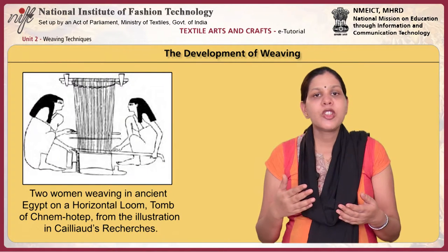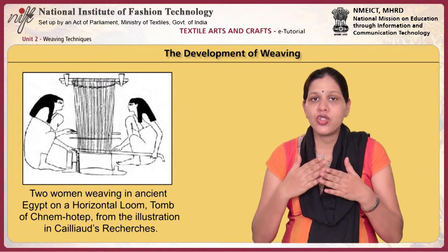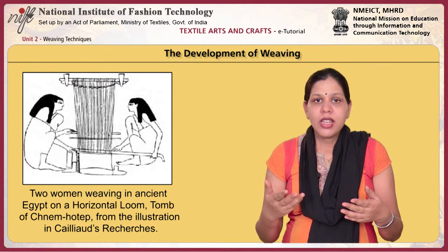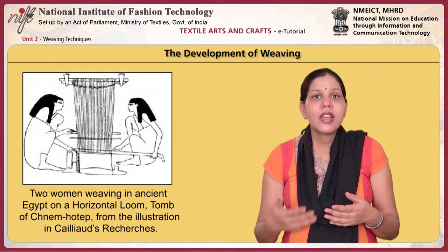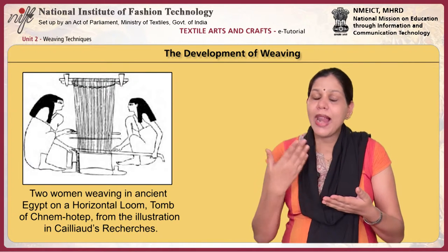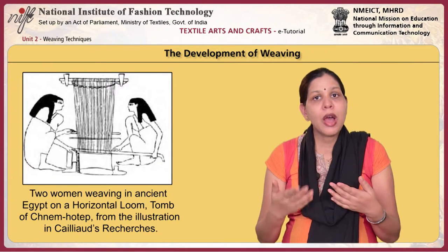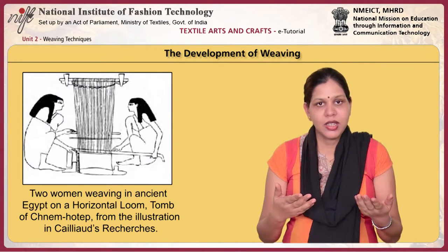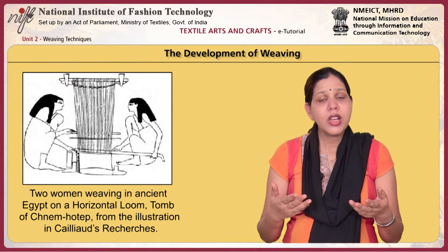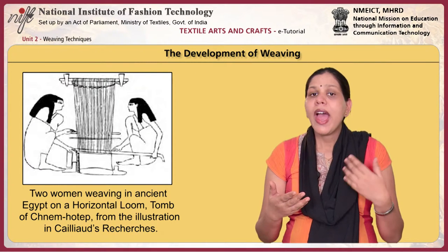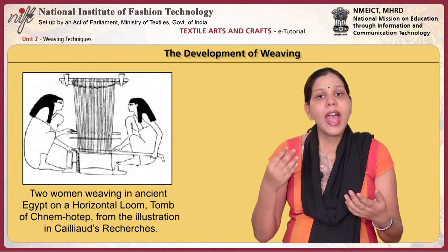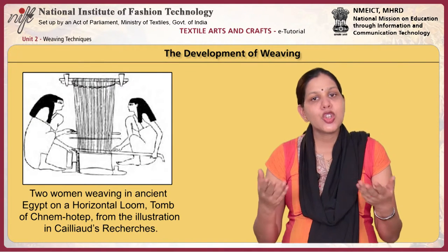Once primitive people learnt ways of creating a woven structure, the possibilities were endless: netting, coverings for huts, containers for goods, carriers for the young, rugs, blankets, hammocks, pouches and body coverings. The actual origin of weaving is obscure. However, ancient Greek-Egyptian records and Indus Valley excavations bear evidence of the art and craft of weaving in these ancient civilizations.